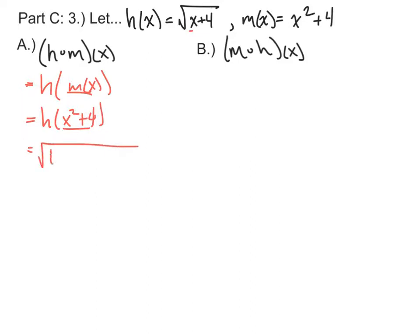That is specifically what I'm going to plug in for x in the function of h. So I'm going to go square root of x plus 4. That's what h is. Instead of x, though, I'm going to use x squared plus 4. Simplifying this expression, we've got the square root of x squared plus 8. And you cannot take the square root of x squared because it's being added to 8 and not being multiplied by 8. So that is your final simplified expression.